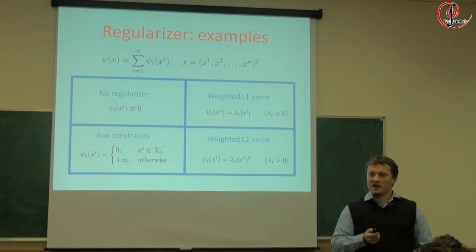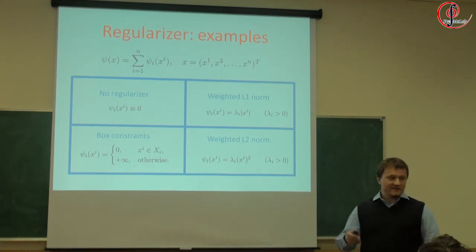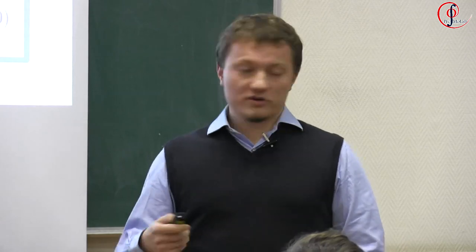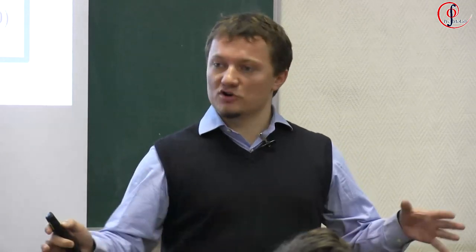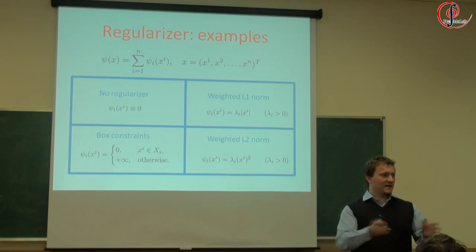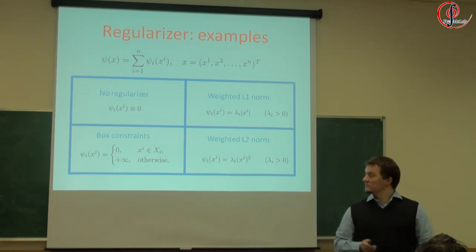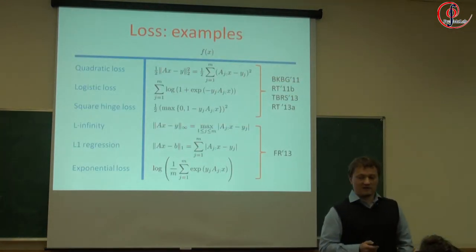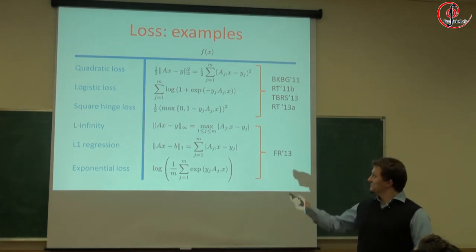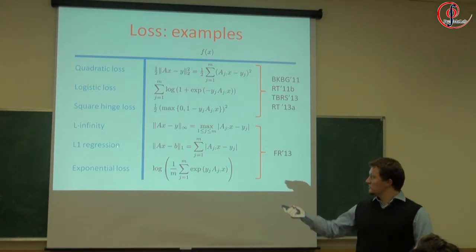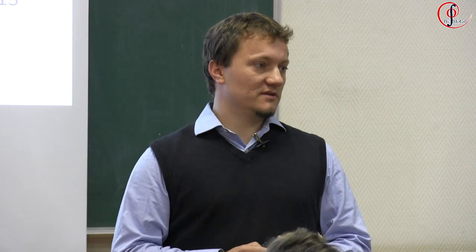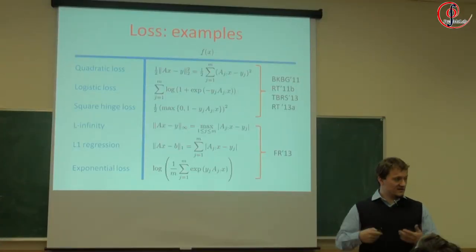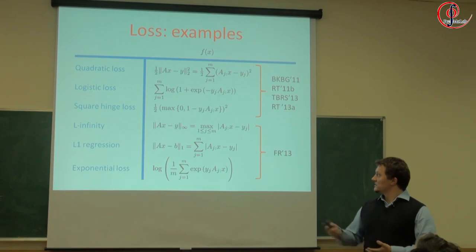This x_i is the i-th coordinate of vector x, and I'll talk about coordinates the whole time, but everything applies to blocks of coordinates. For the losses, you have quadratic loss, logistic loss — all of these are convex. Some are smooth, some are non-smooth. For example, L1 regression is non-smooth, so it would be applied to the smoothed version of it. L-infinity is non-smooth — you can smooth it and apply it as well.